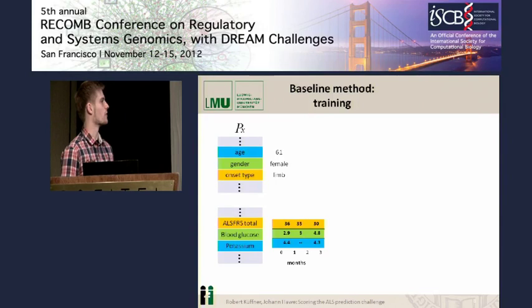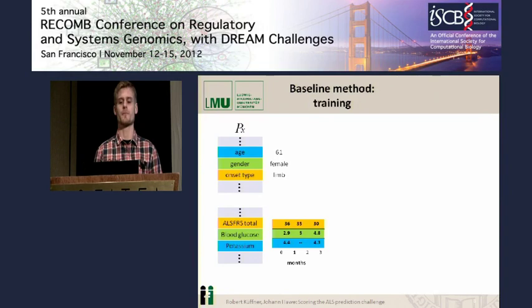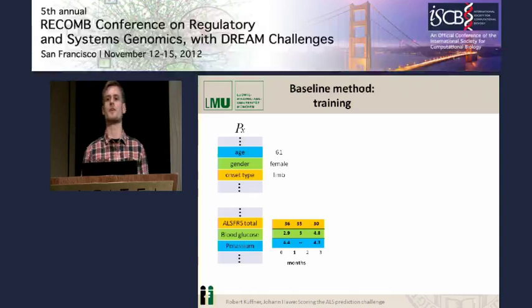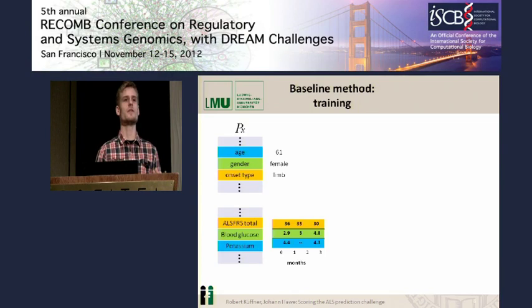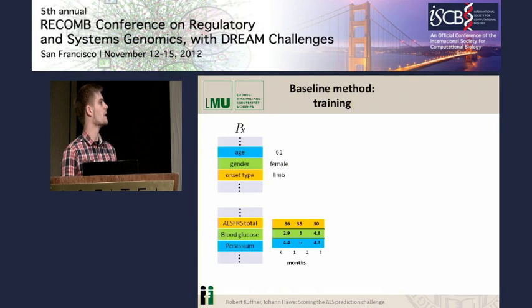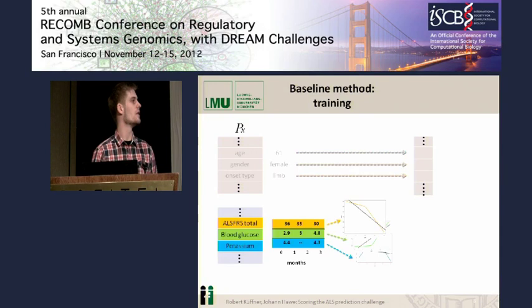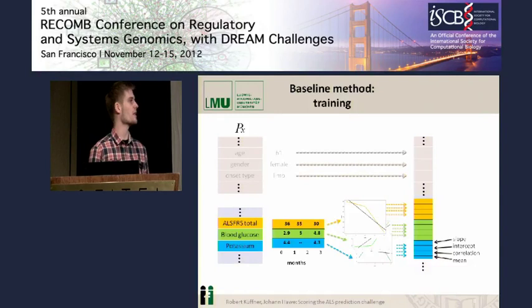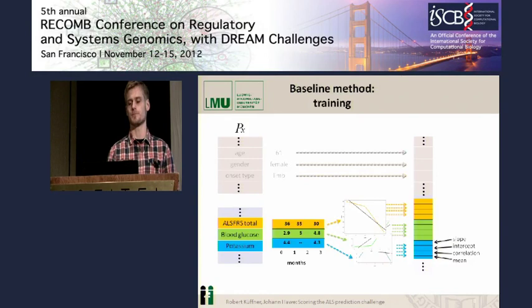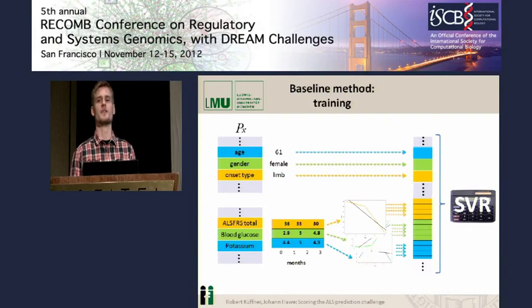For different patients it might occur that during the first three months we have only two, three, four, or five assessments of the values. Since we cannot directly use these different types of data for a standard machine learning approach, we derived a feature vector. For constant data we used it directly, and for time-variant data we performed a simple linear regression on the first three months, deriving four values for each feature: the slope, intercept, correlation, and mean. This feature vector was then used as input to support vector regression to predict future disease progression.